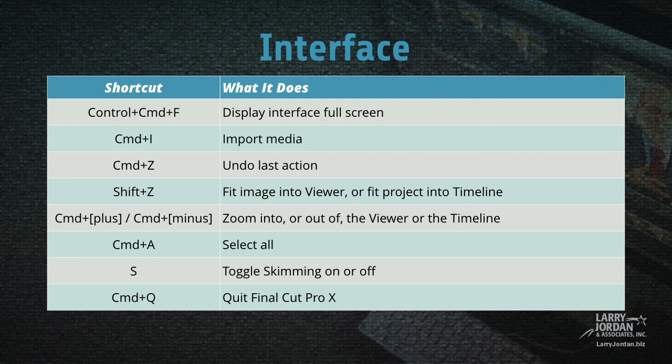In the interface, Control-Command-F displays the interface fullscreen. Command-I imports media. Command-Z undoes the last action. Shift-Z fits the image into the viewer or fits the project into the timeline. Command-Plus zooms in and Command-Minus zooms out of the viewer or the timeline. Command-A selects everything. S toggles skimming on or off. Command-Q quits Final Cut Pro X.